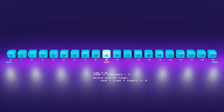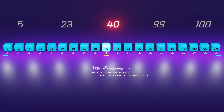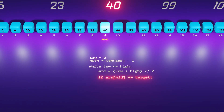Now let's identify a few scenarios or targets we'll be working with in our code. There are three possibilities to consider. The first possibility is when the middle element is equal to our target — we have successfully found the position of the target. Using 40 as the target and covering the first possibility: if array of mid equals the target, we return mid. In this case, we return the index nine.